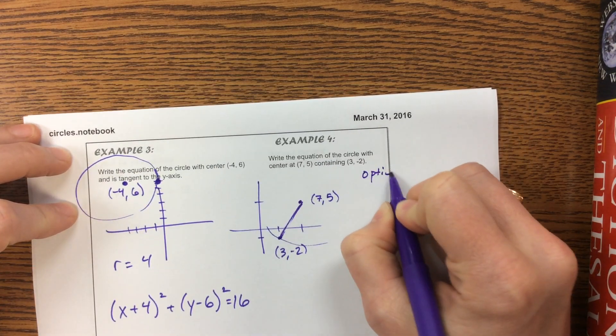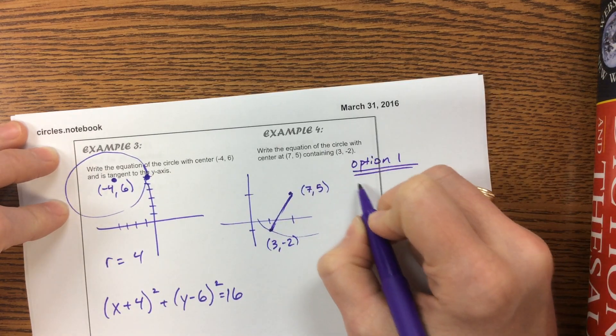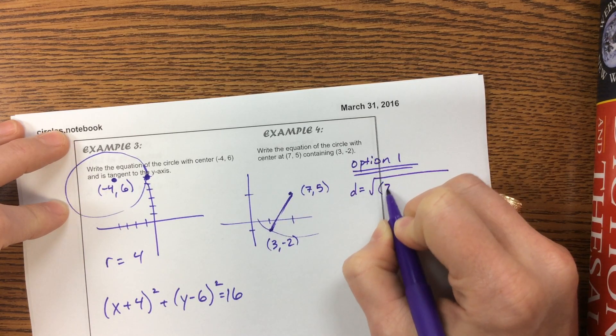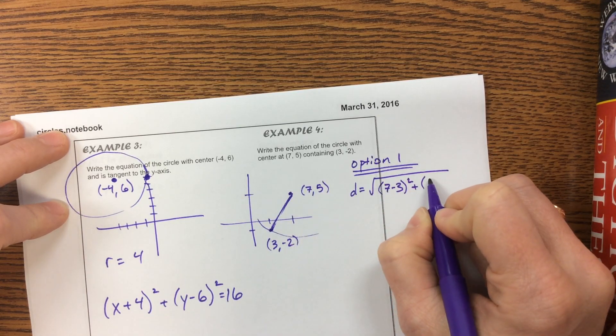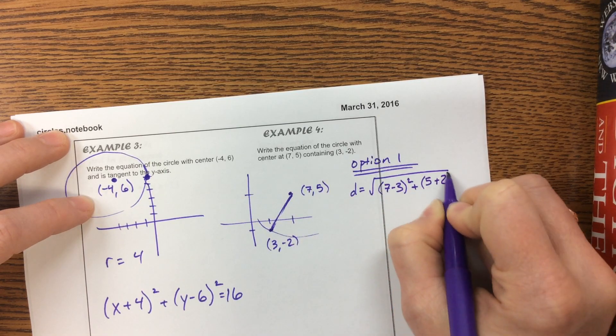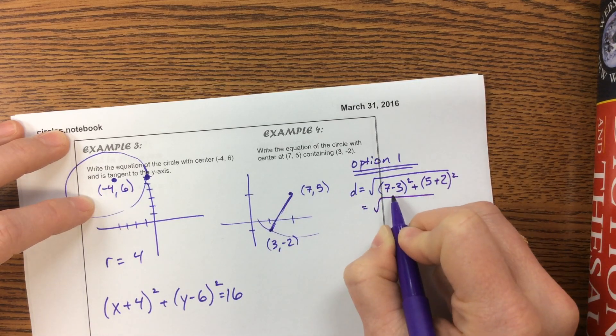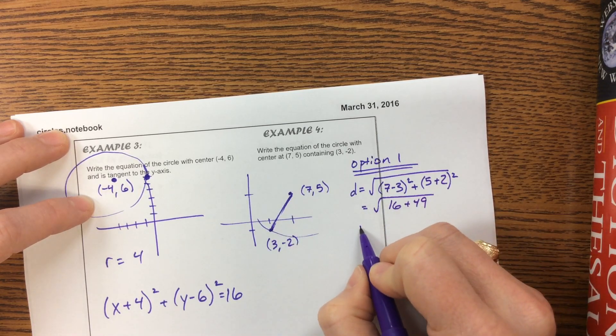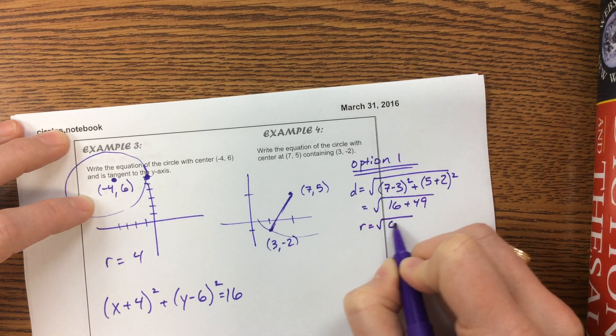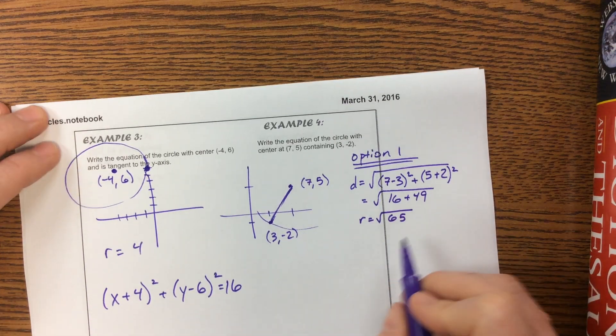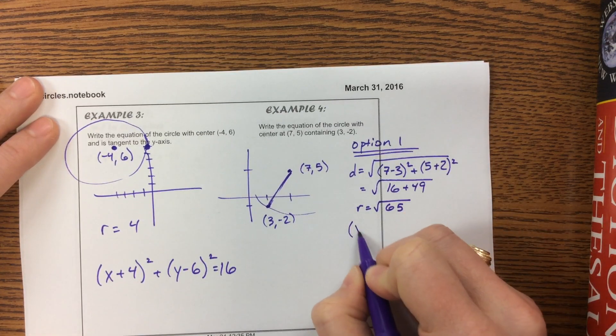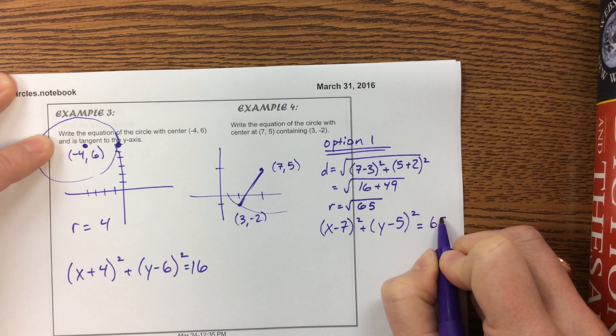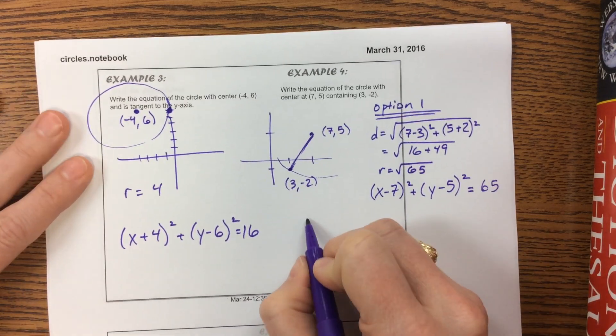Option 1 is to use the distance formula. Distance equals the square root of 7 minus 3 squared plus 5 minus negative 2 squared. That's the square root of 16 plus 49. So the radius is the square root of 65, and in our equation we use 65. Option 1 gives us x minus 7 squared plus y minus 5 squared equals 65.